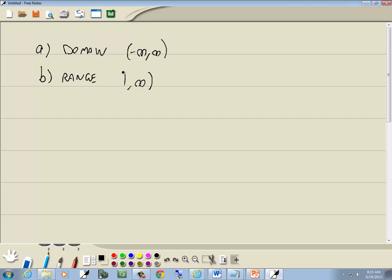Infinities always have parentheses. And a number, unless there's an open circle there, a little open dot, it always has a bracket.